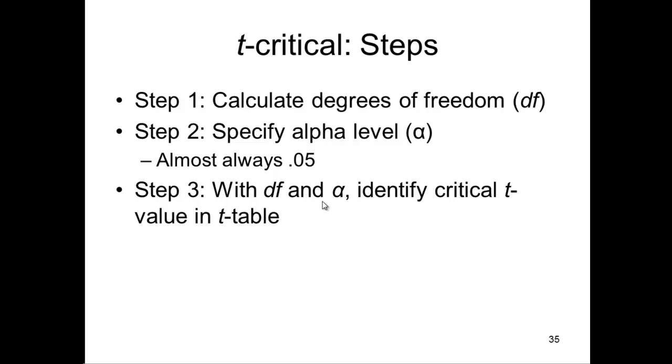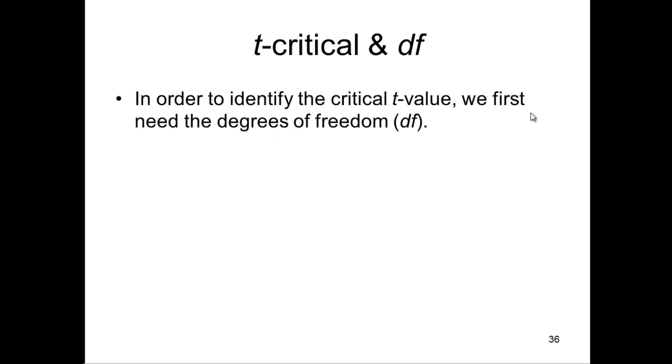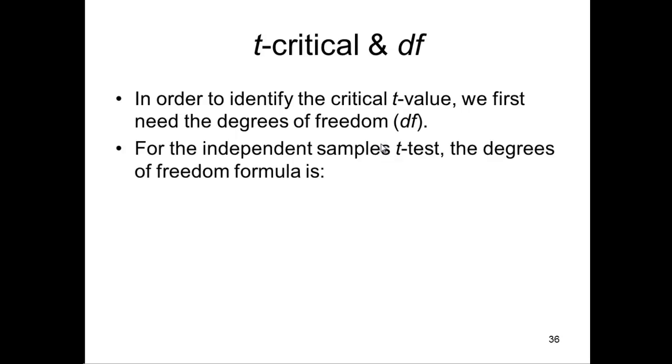So, with degrees of freedom and alpha, we can identify the critical t-value in the t-table. A critical t-value is not something you calculate with a formula. You identify it in a table at the back of a book, usually. So, in order to identify the critical, we first need degrees of freedom. And the degrees of freedom formula for the independent sample t-test is sample size 1 plus sample size 2, so that's group 1 and group 2 minus 2. And in this case, for the smoker and non-smoker group, non-smokers is 17 plus smokers is 19 minus 2 is 34. So, the degrees of freedom for the independent sample t-test is equal to 34 based on this basic formula.